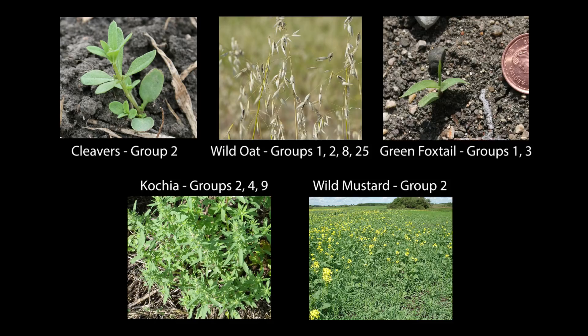Within crop types, herbicide groups to control weeds are limited, and herbicide-resistant weeds have been reported in Saskatchewan for herbicide groups 1, 2, 3, 4, 8, 9, and 25, as well as in populations resistant to more than one group.